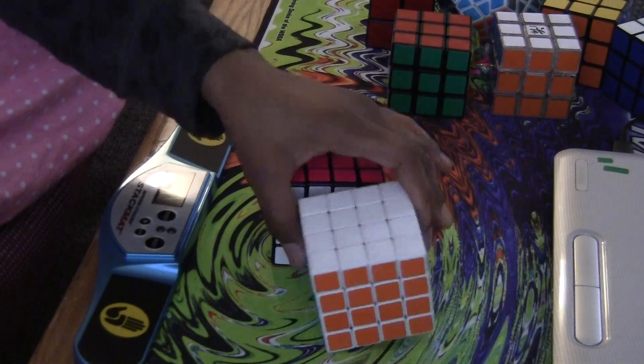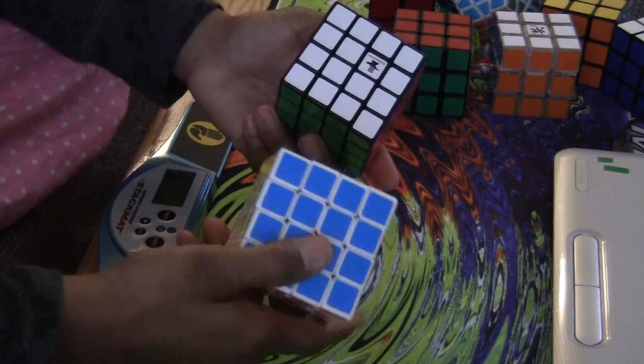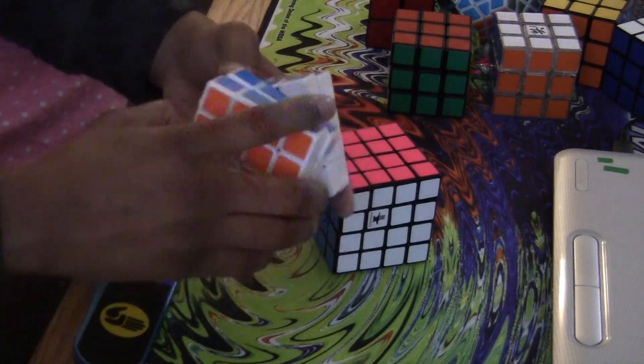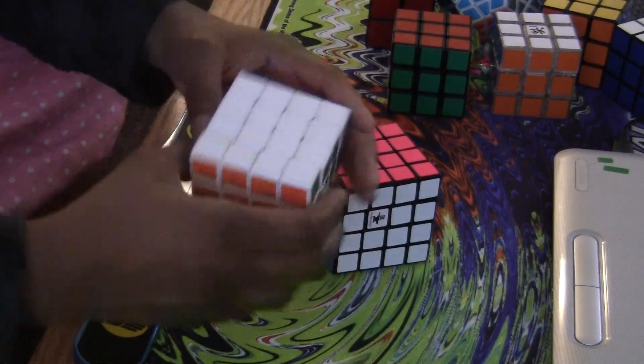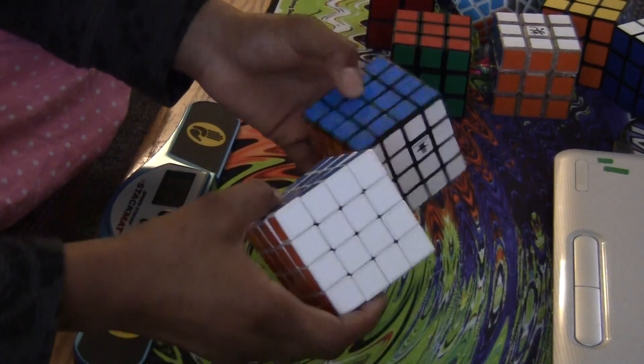Right out of the box, the Ghost Hand is the smoother out of the two. It turns smoother and just feels much better in your hands. The Ghost Hand feels different from the Sheng Xiao.